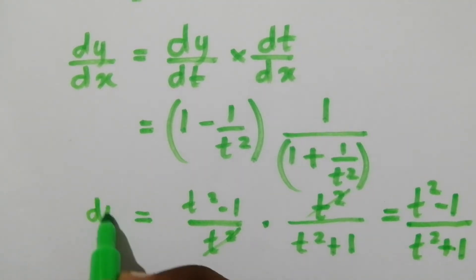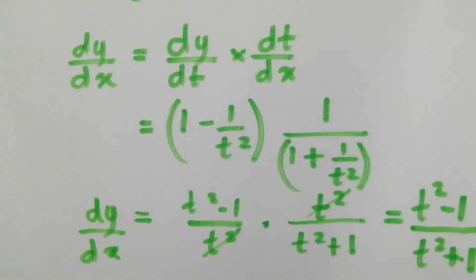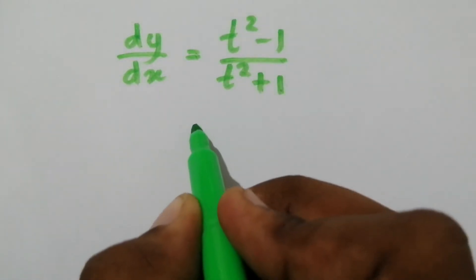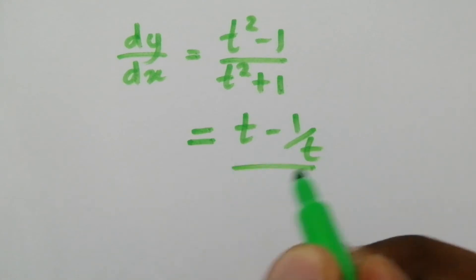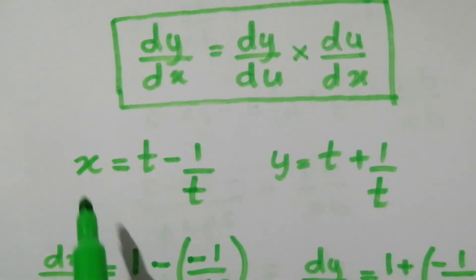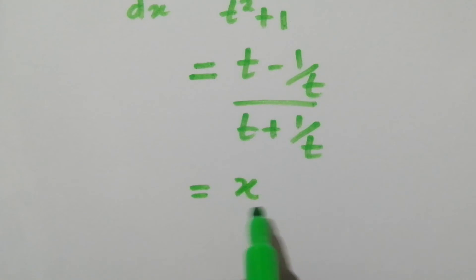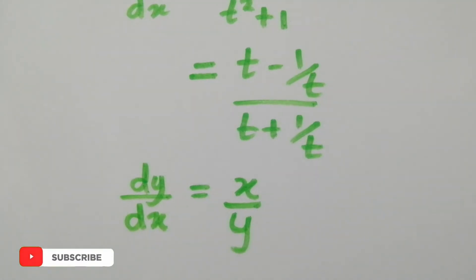Now we have dy/dx in terms of t. We can express this in terms of x and y. Dividing numerator and denominator by t: (t − 1/t) / (t + 1/t), where t − 1/t equals x and t + 1/t equals y. Therefore, dy/dx = x / y.